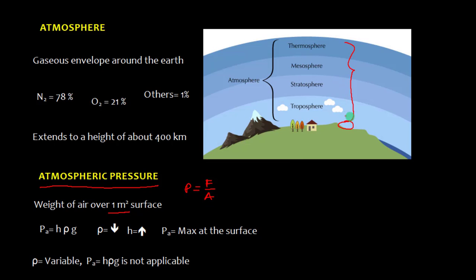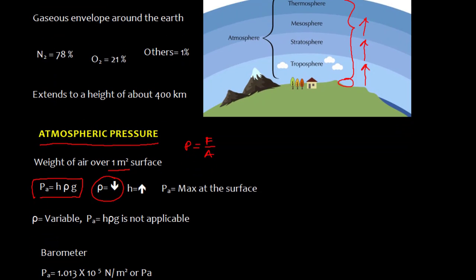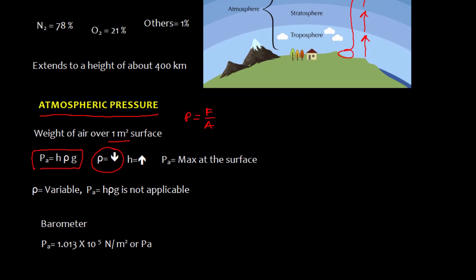What we know is that the density is not constant — density keeps decreasing as we go higher. So we have the equation P = Hρg, but this equation is applicable only when ρ is constant. Since density is changing with height, this formula is not directly applicable. So we use an instrument called a barometer, which is used to measure atmospheric pressure. The atmospheric pressure is given as 1.013 × 10⁵ Newton per meter square, also called Pascal.